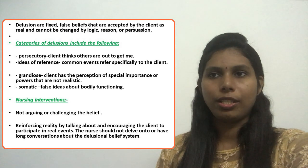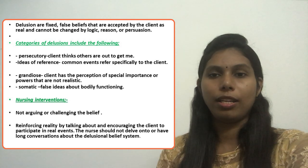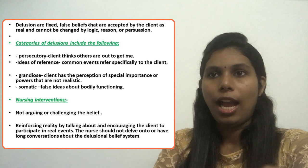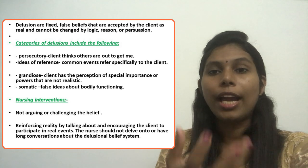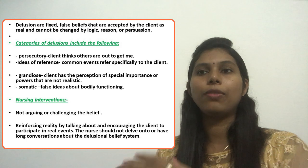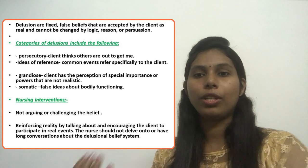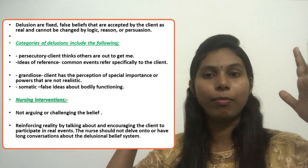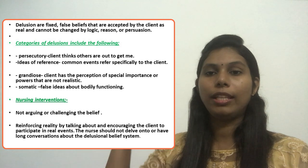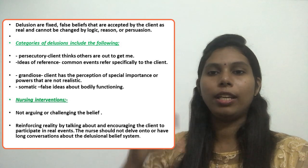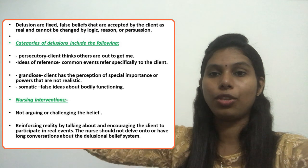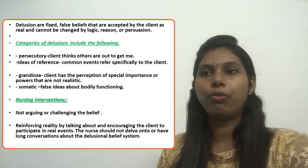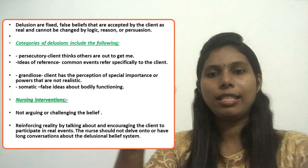Categories of delusions include: persecutory delusions — the client thinks 'others are out to get me, I am in an unsafe situation'; ideas of reference — common events are seen as referring specifically to the client; grandiose delusions — the client has a perception of special importance or powers that are not realistic, thinking they are a very important or powerful person; and somatic delusions — false ideas about bodily functioning.